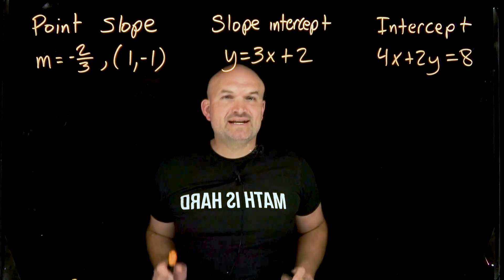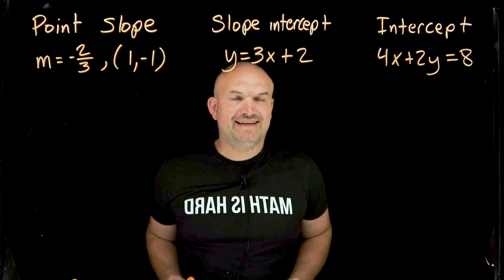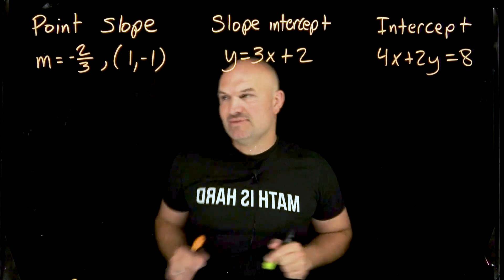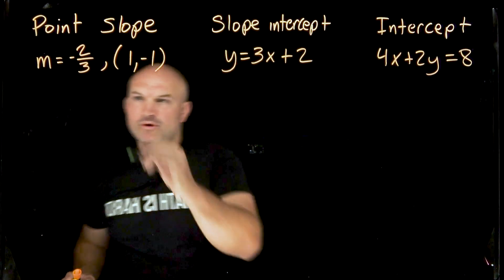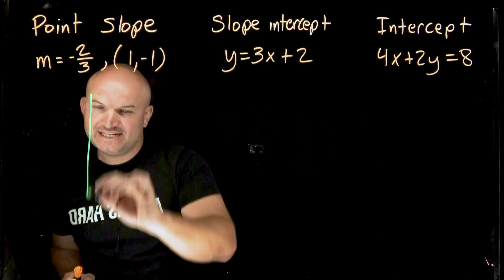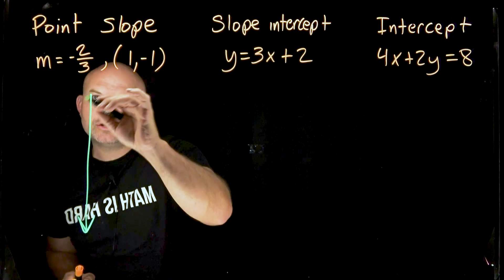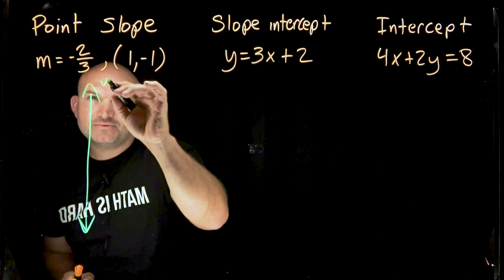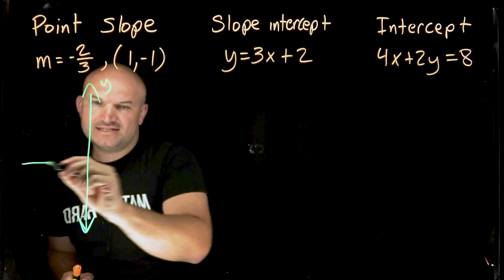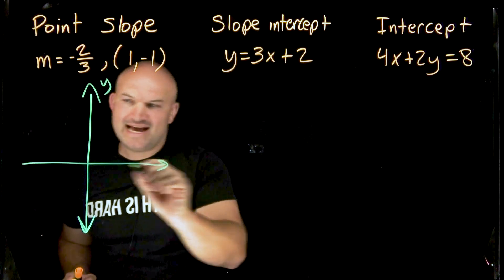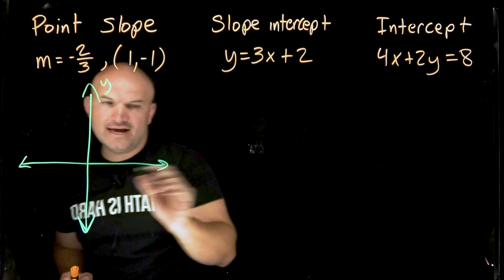Let's explore all the different ways that we can graph a line. We're going to be graphing on what we call the Cartesian coordinate grid, which has a y-axis as well as an x-axis.